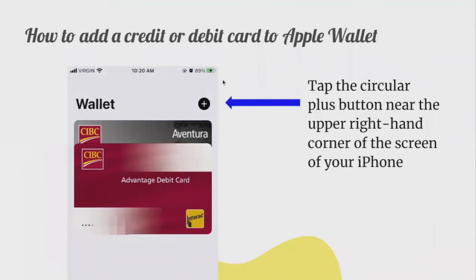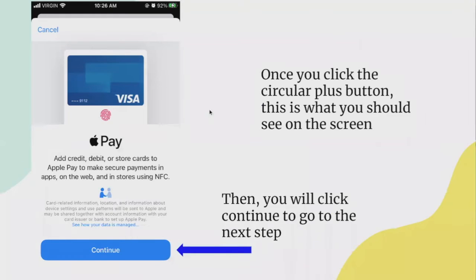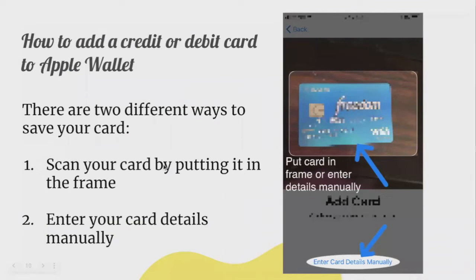To add a credit or debit card to your Apple Wallet, tap the circular plus button near the upper right-hand corner of your screen. After tapping it, you'll see a screen prompting you to click Continue. There are two ways to save your card: the first way is to scan your card by putting it into the camera frame, and the second way is to enter your card details manually.